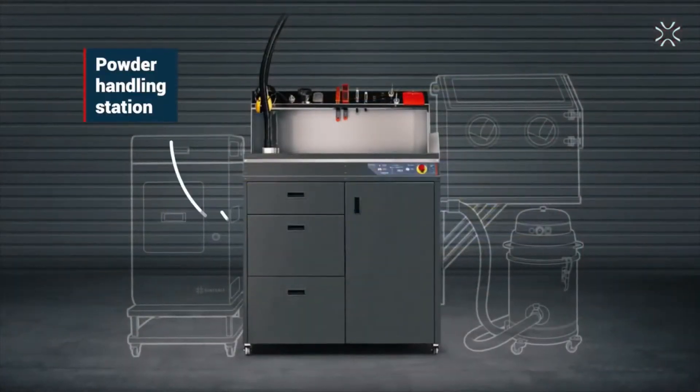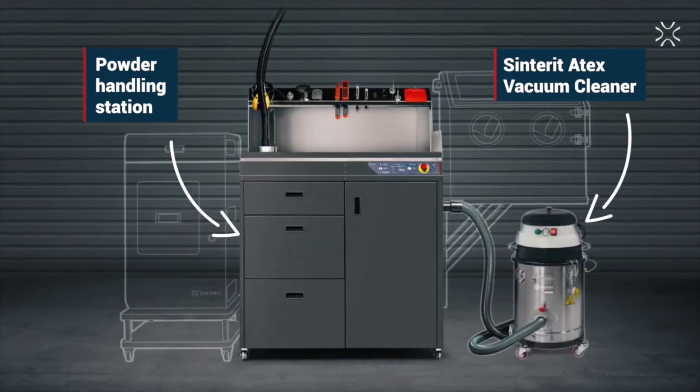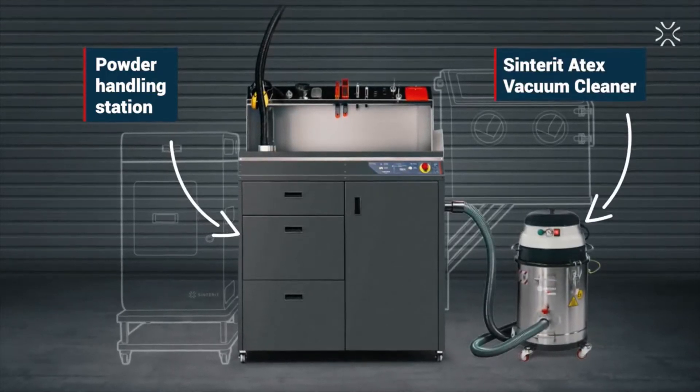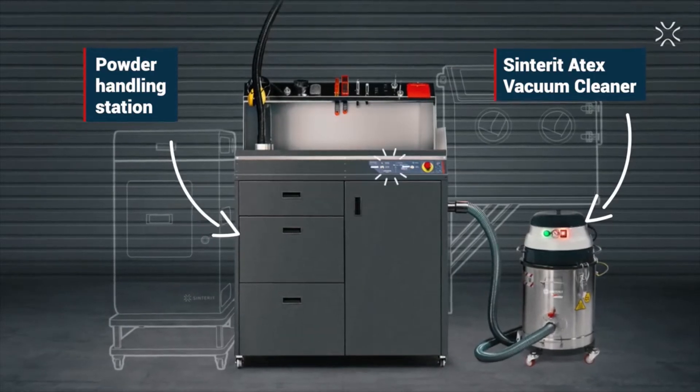You can consider the Sinterit Atex vacuum cleaner as a suction engine for the PHS. The vacuum cleaner is a device that you can turn on and off and the PHS will detect the suction and will work in sync with it.